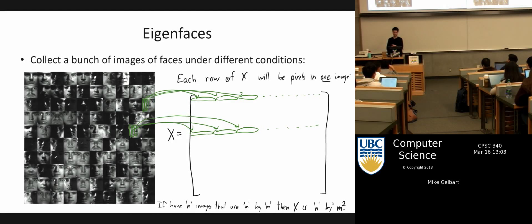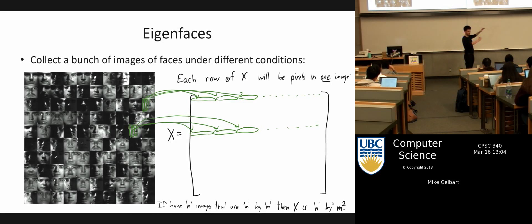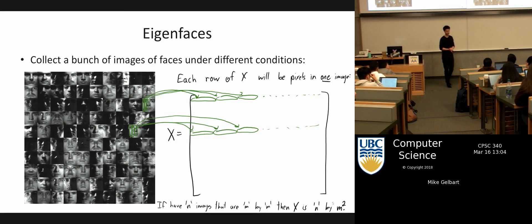We need to be careful about this flattening and getting our orientation straight. The fact that I'm showing faces in a grid has no meaning — it's just easier to fit them on the slide. Each face is really in a line, and each one is flattened out into a vector.